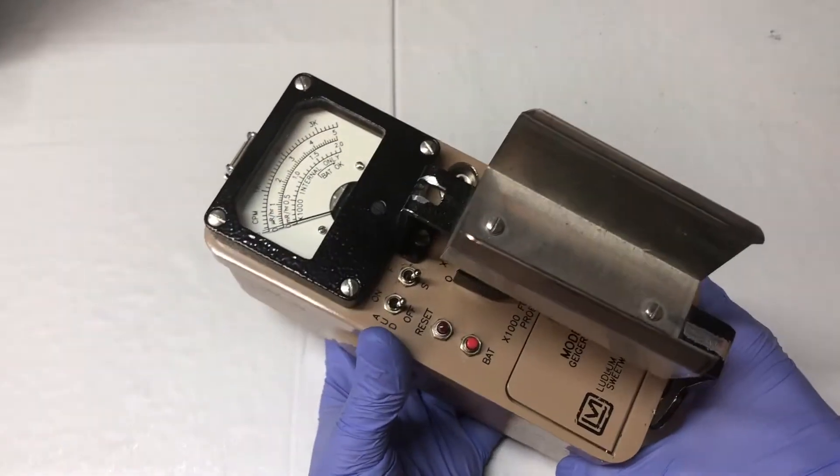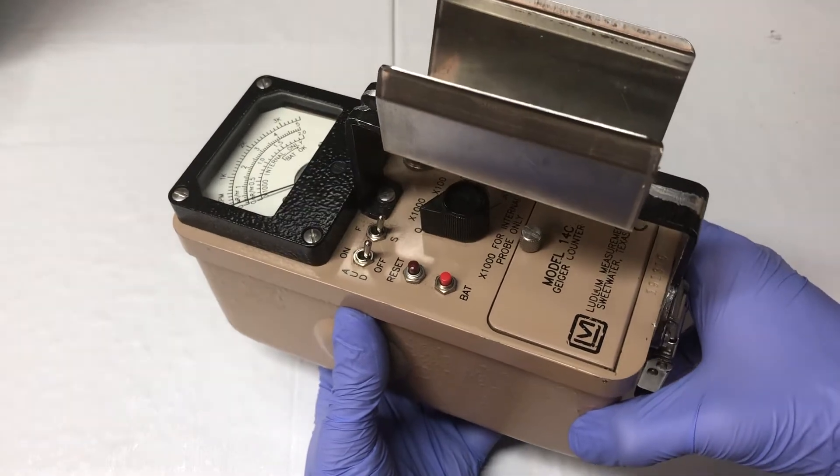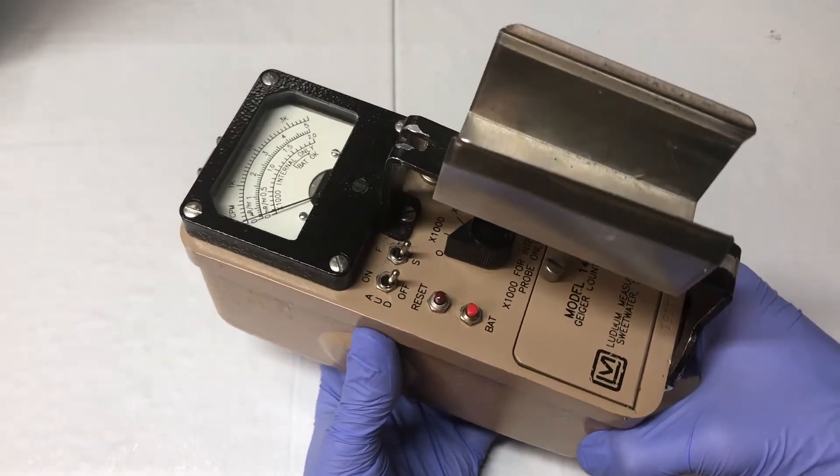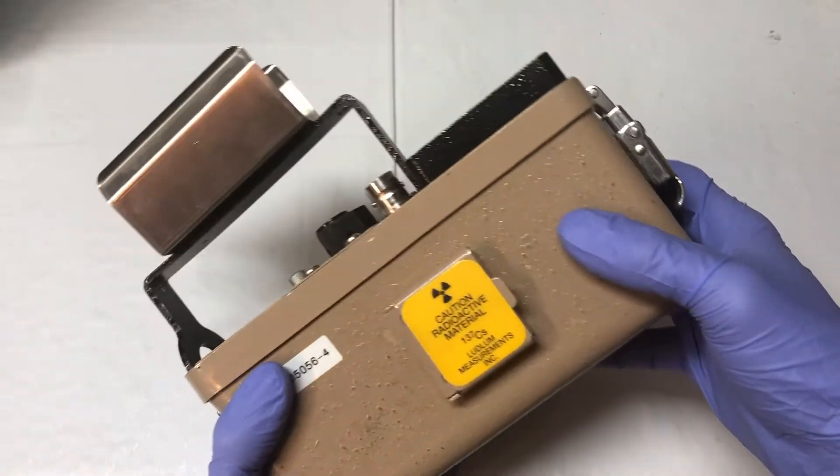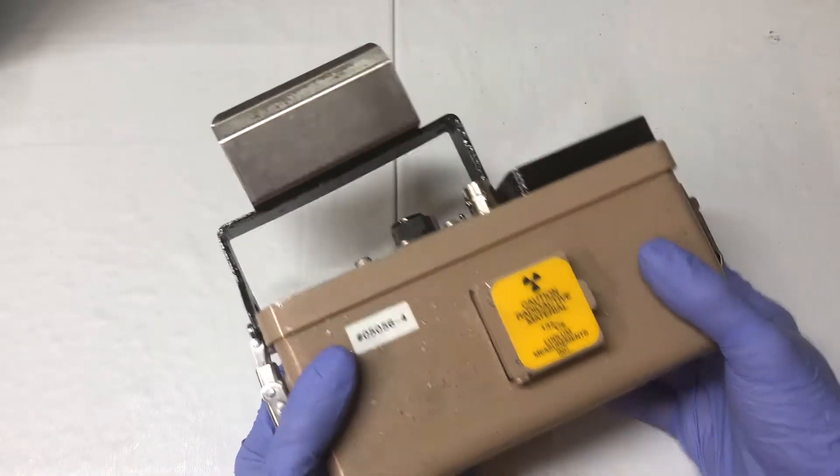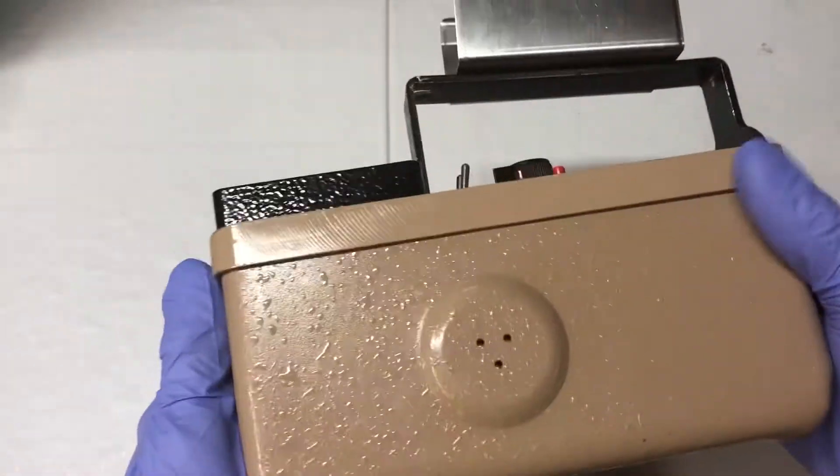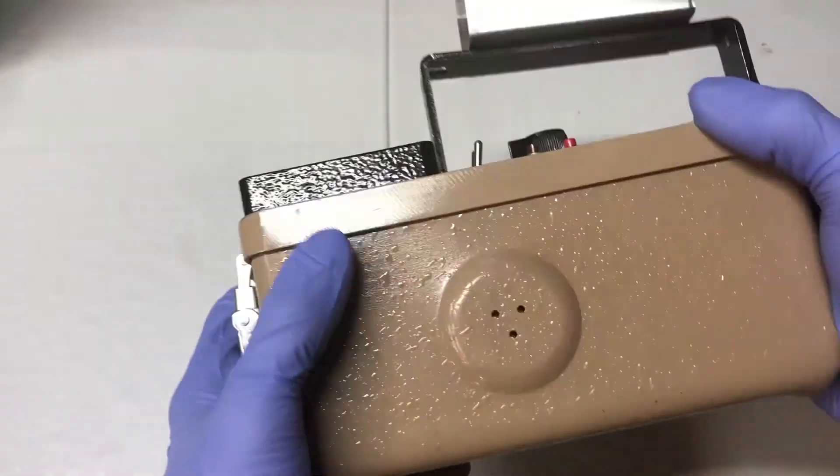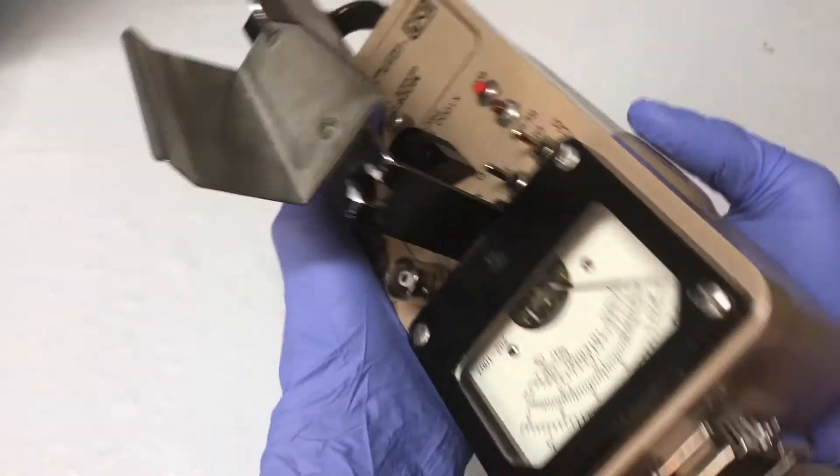Today we'll be taking a look at the Ludlum 14C Geiger counter from Ludlum Measurements Incorporation, Sweetwater, Texas. It's in a ruggedized, waterproof container. It weighs around 1.3 kilograms, or 1.6 with the batteries installed.